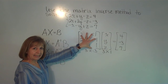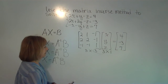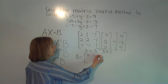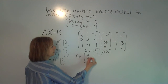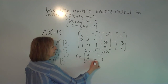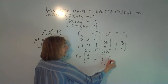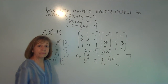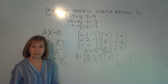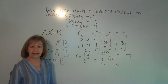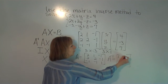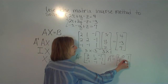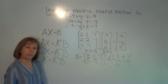Now we need the inverse of matrix A. For matrix A being [2, 1, -1; 2, 2, -1; -1, -1, 1], the inverse of A — which you can find in the previous video or by working through the process — is [1, 0, 1; -1, 1, 0; 0, 1, 2].